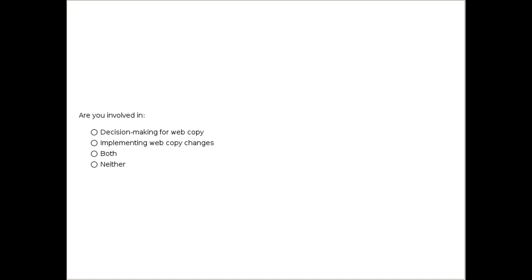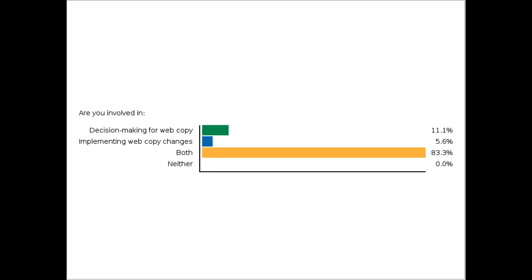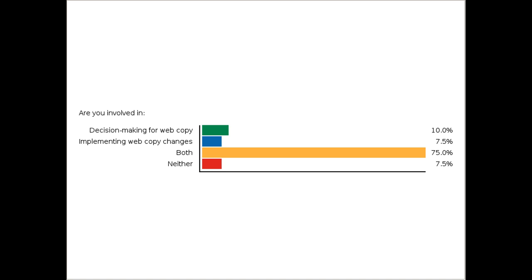Are you currently involved in decision making for web copy? Are you the person who actually implements web copy changes? Are you doing both — deciding and publishing and editing the site? Or are you doing neither? A lot of people are chiming in that they do both, and we also see that in the poll. Nearly 74% are doing both decision making and implementing.